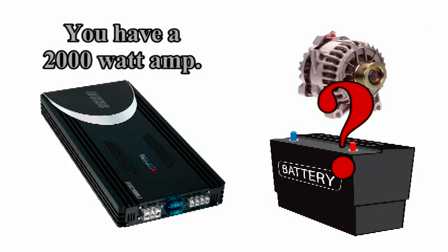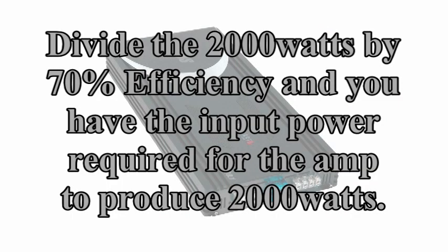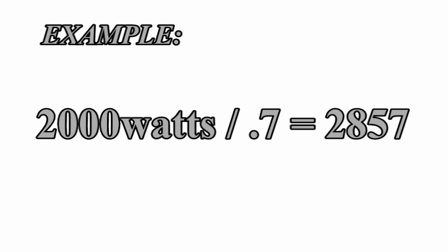Let's say you have a 2000 watt amplifier and you want the proper electrical system to protect your aftermarket investment. Simply divide the 2000 watts by 70% efficiency and you get the input power required by that amplifier to get the 2000 watts. So your example is 2000 watts divided by 0.7 equals 2857.